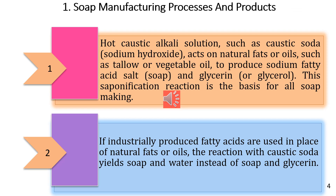For manufacturing processes and products, there are two processes involved in soap manufacturing. In the first process, a hot caustic liquid solution such as caustic soda — sodium hydroxide — reacts with natural fats such as tallow or vegetable oil to produce sodium fatty acid salts (soap) and glycerol. Tallow is animal fat made up of triglycerides that are solid at room temperature.